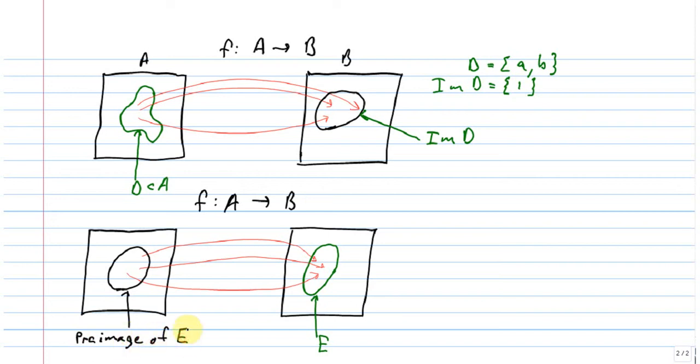And we use sort of compelling notation that can be kind of confusing. We call this f inverse of E, or the pre-image of E. We use that f inverse notation. But we don't want to get too carried away, because we need special properties to have an inverse function. We don't need special properties to have a pre-image.